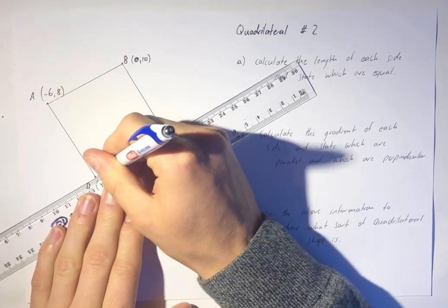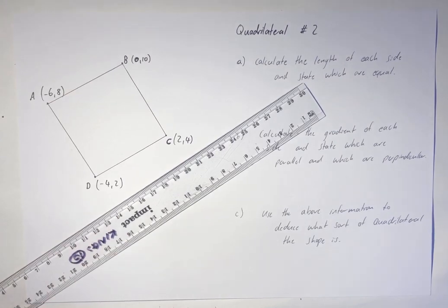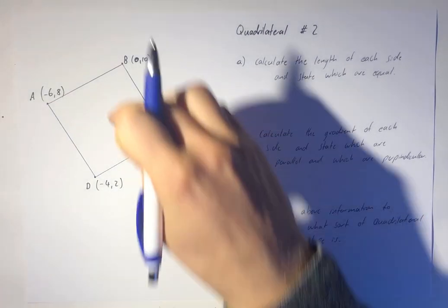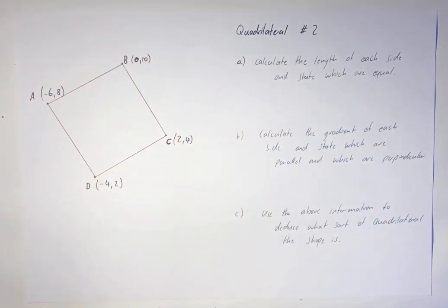It's not immediately obvious what the shape's going to be, but it's looking kind of like it might be a square or a parallelogram. There might be really small differences in lengths and gradients in an assessment, so we have to be very careful.